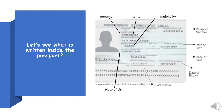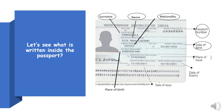Surname — it is your family name, the second name. Name — your own name. Your nationality. Passport number. Your date of birth. The passport's place of issue. Passport's date of expiry. Date of issue — that is when the passport was issued. Your place of birth.